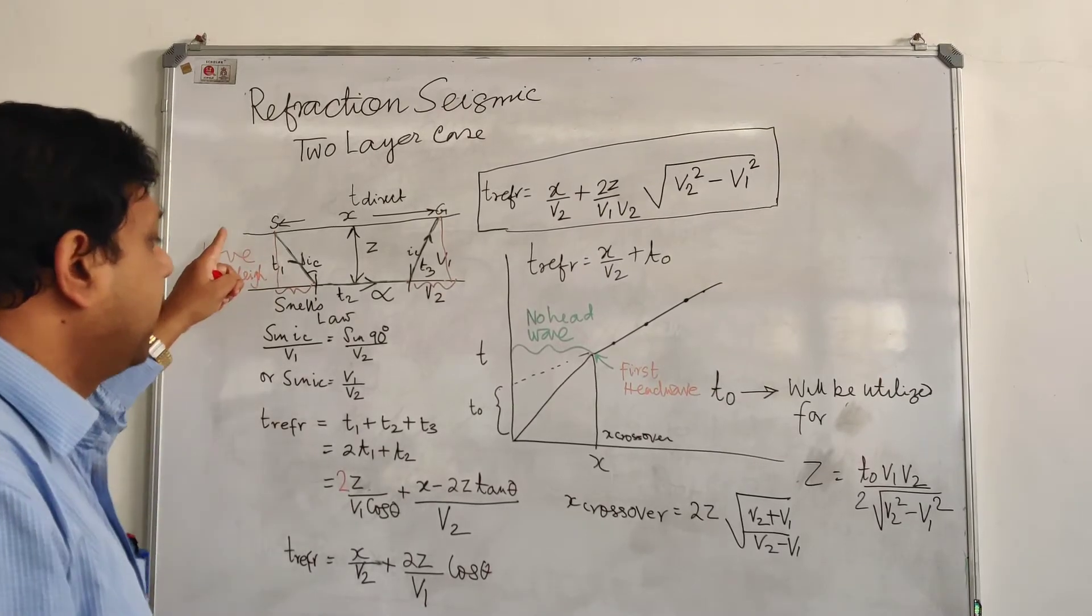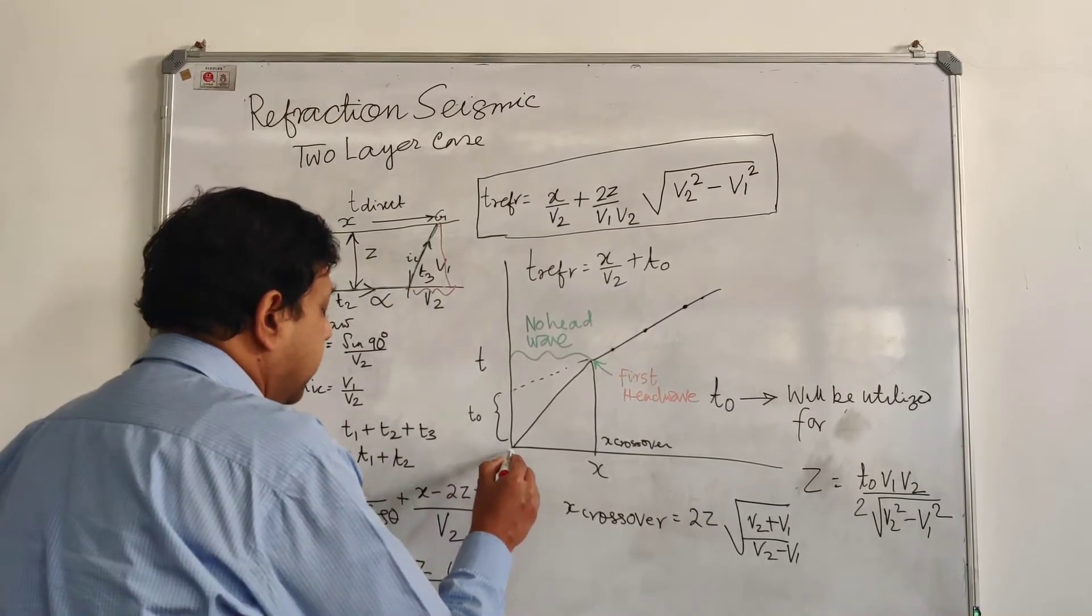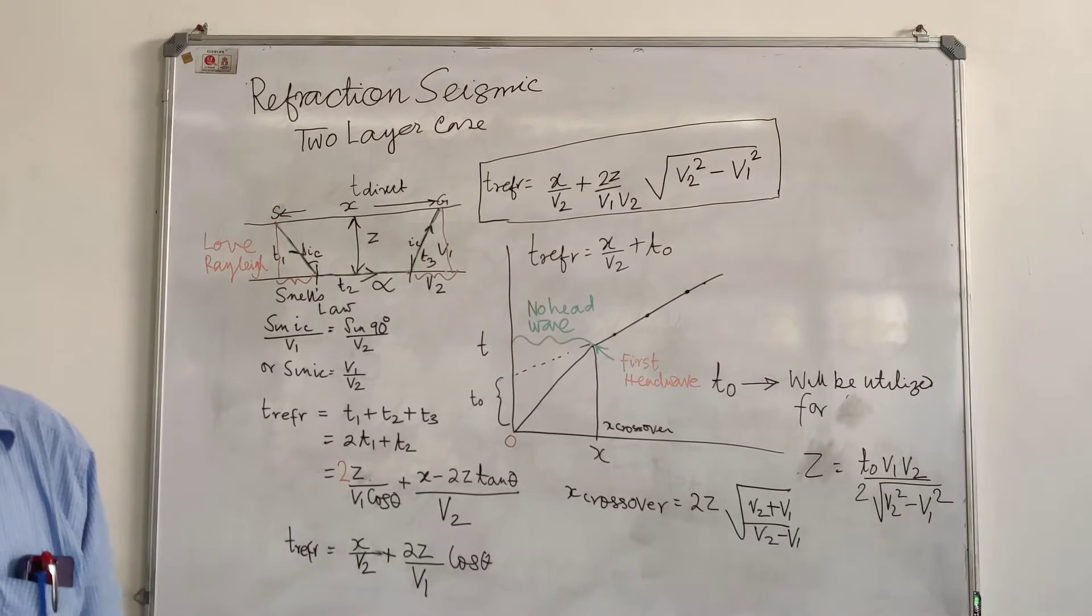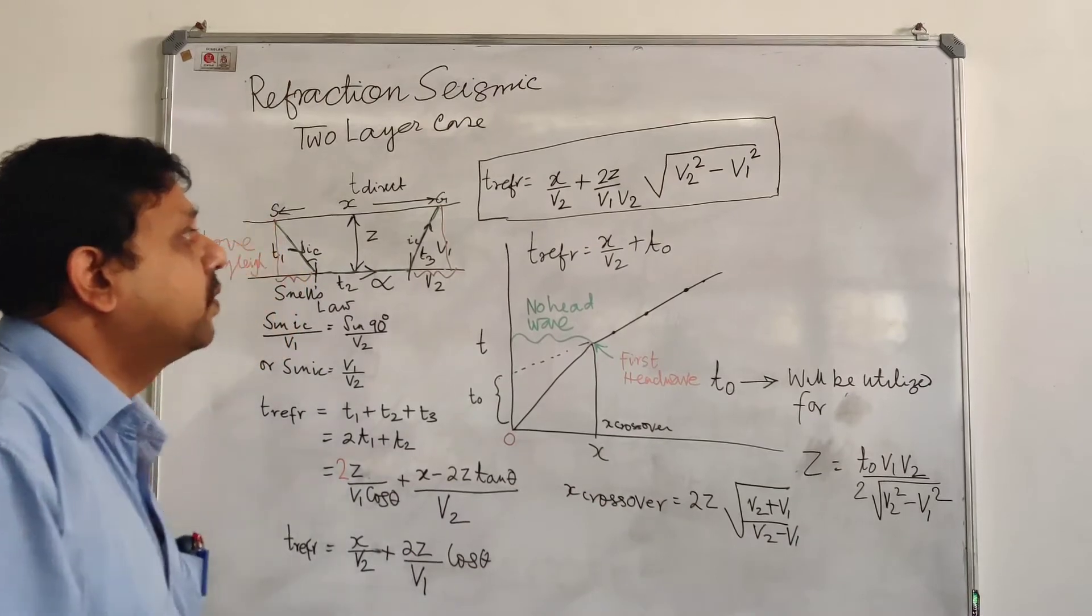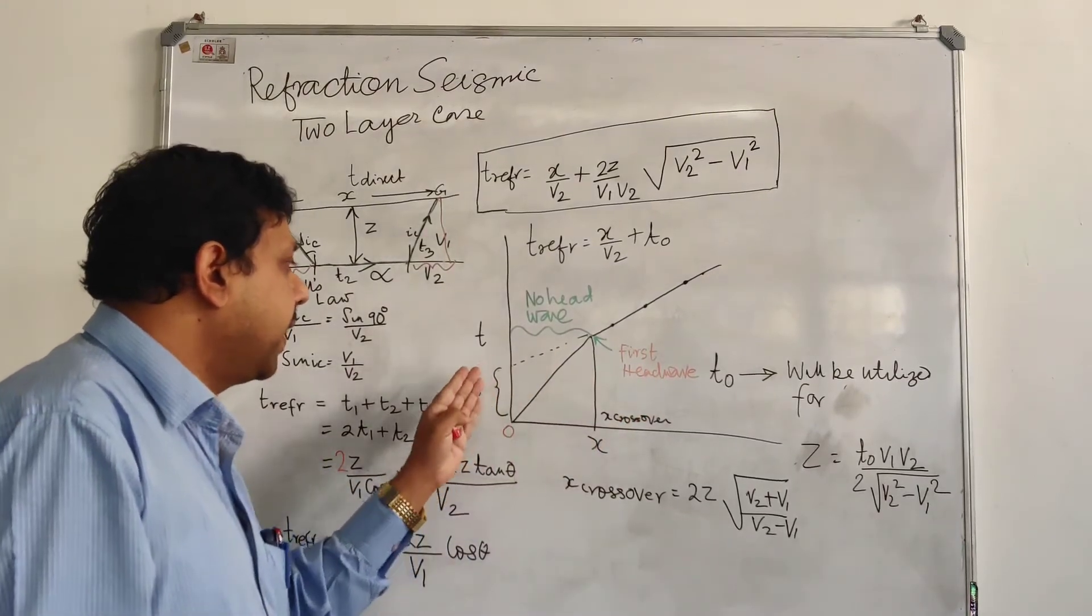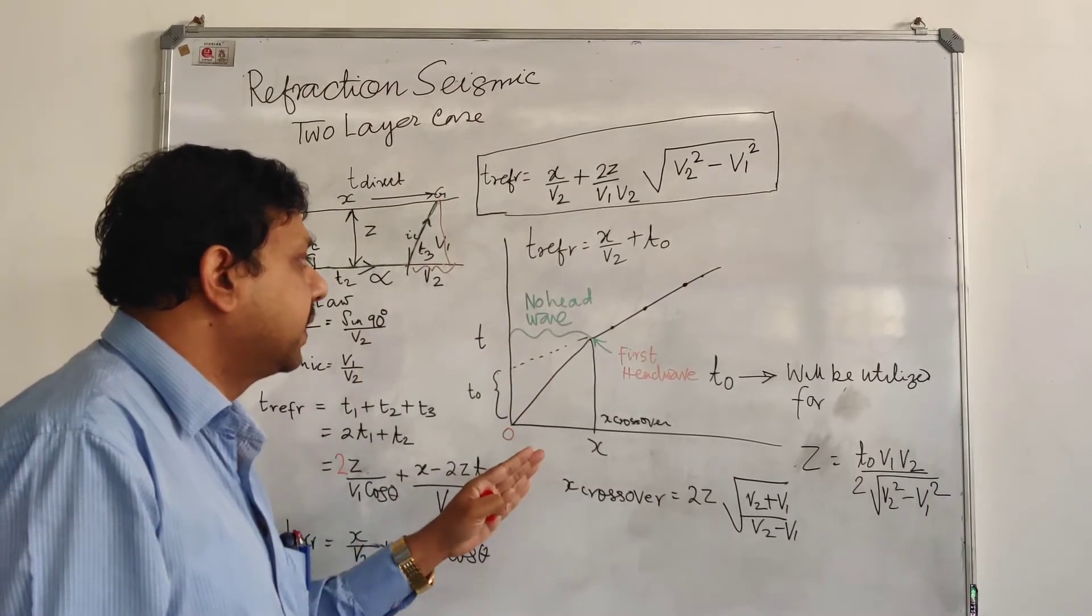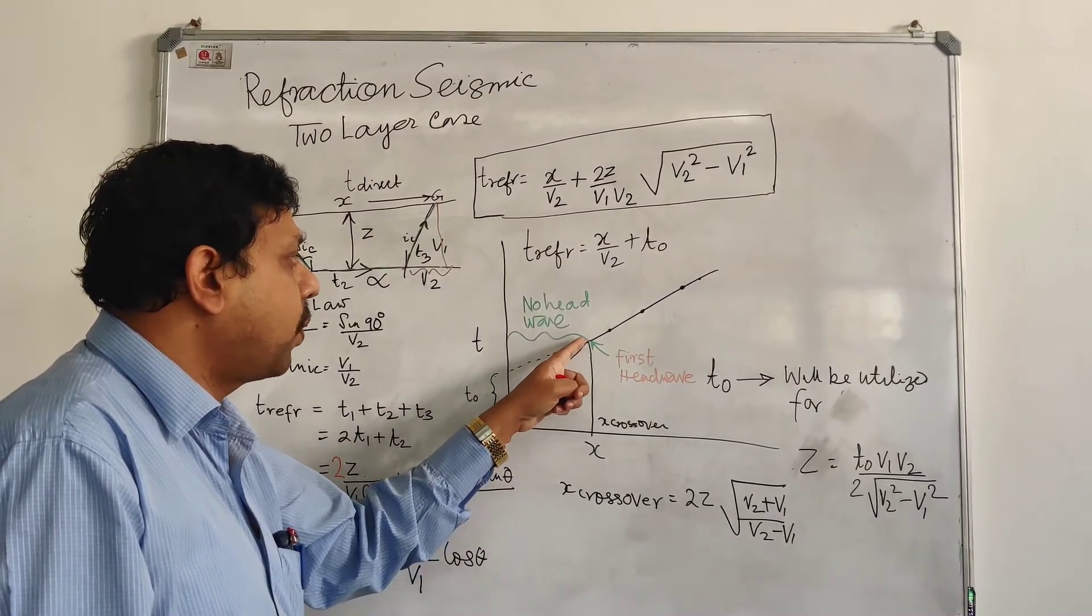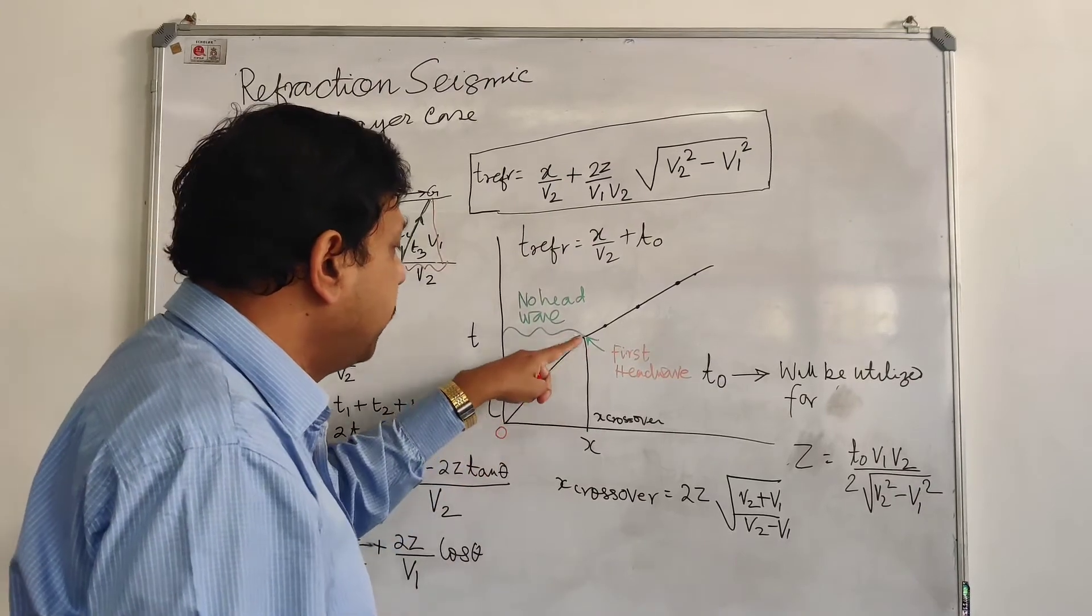Now, if you take the direct wave, the direct wave has traveled from S to G. If we plot that, it will start in a TX plot from the zero and it will be a straight line, Y is equal to MX plus C. Now, if I put this equation as T refraction is equal to X by V2 plus T0, then T0 is the intercept which can be found from the graph TX. And we will not have any head wave or refraction wave after this point. So you extrapolate it into the T axis and you get T0, and your first wave starts here.